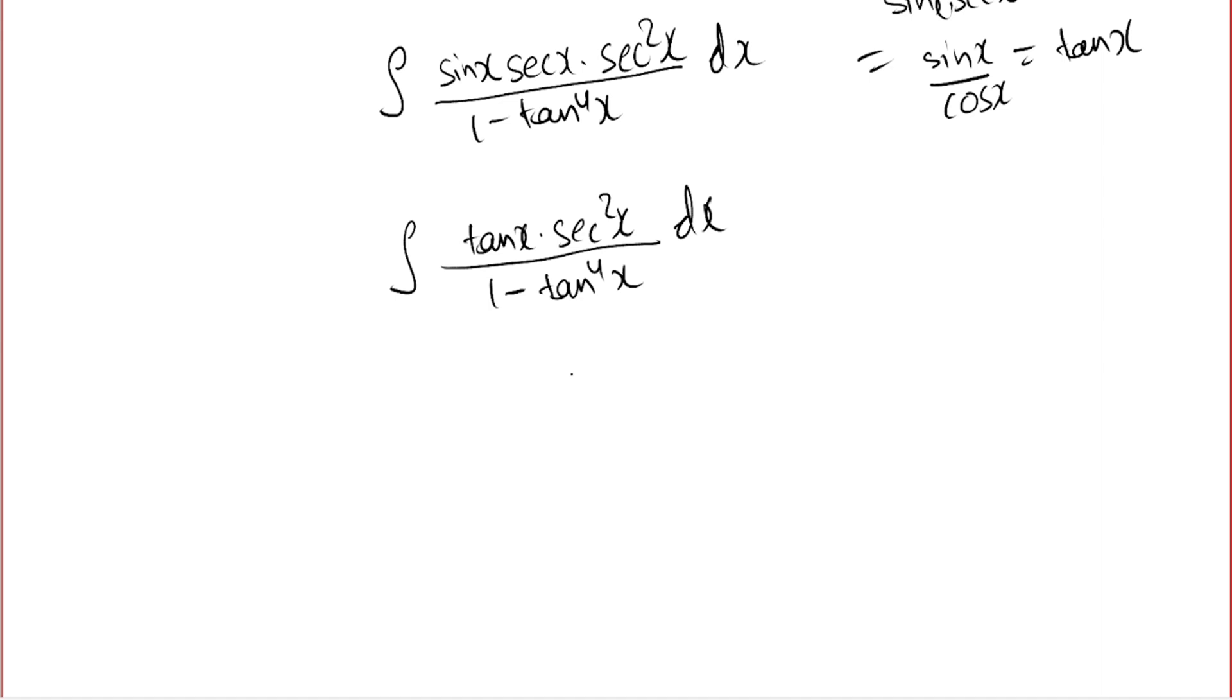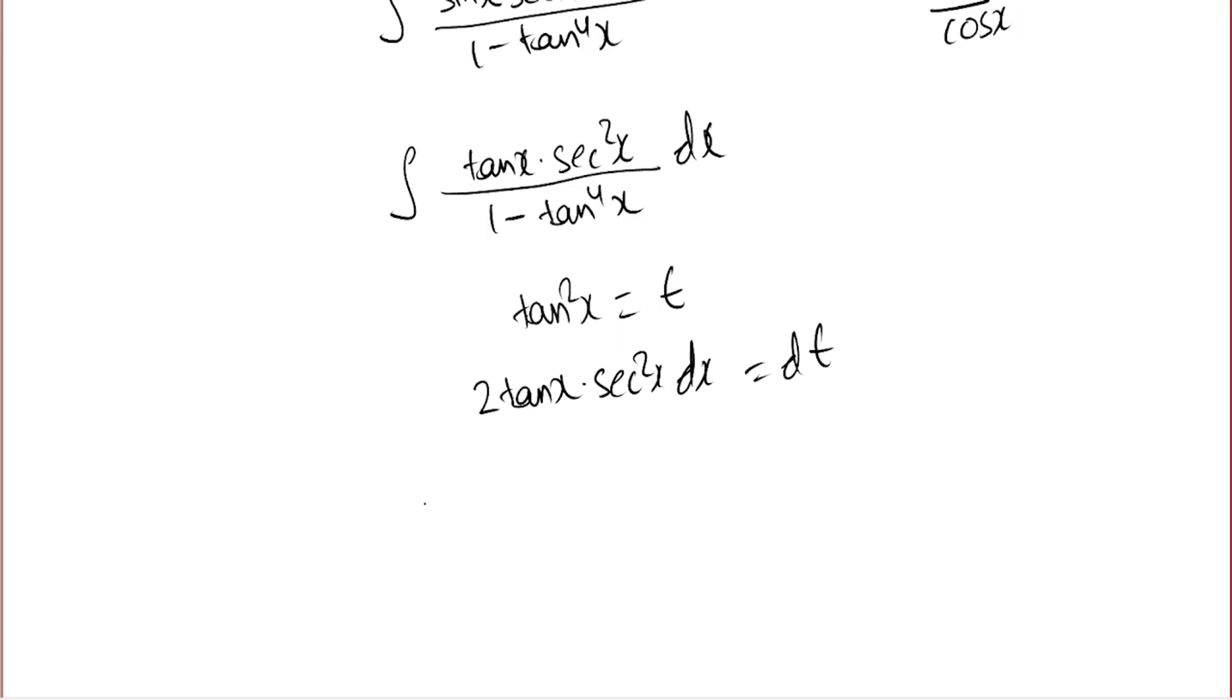Tan square x equal to t. So if you differentiate it, we get 2 tan x, and differentiation of tan is sec square x dx equal to dt. So our integral becomes tan x into sec square x dx is half dt, and in denominator we have 1 minus t square.